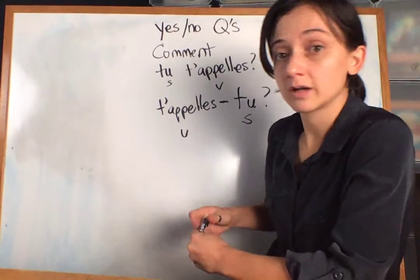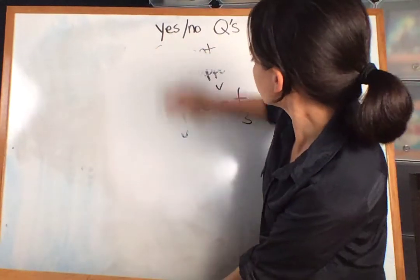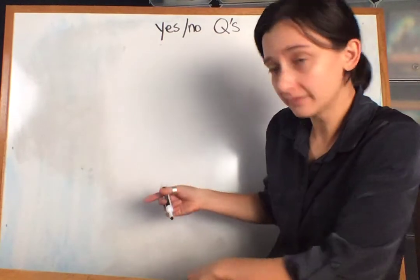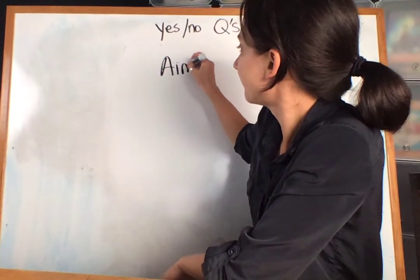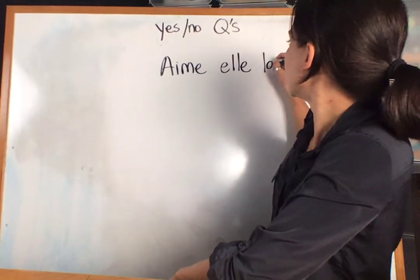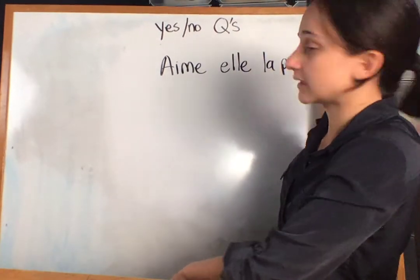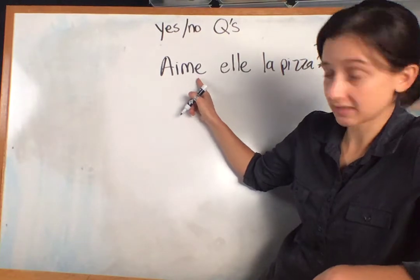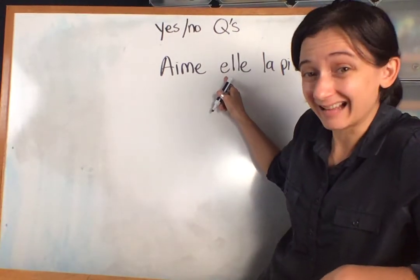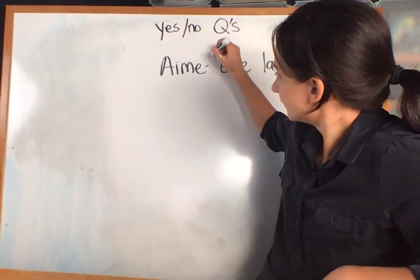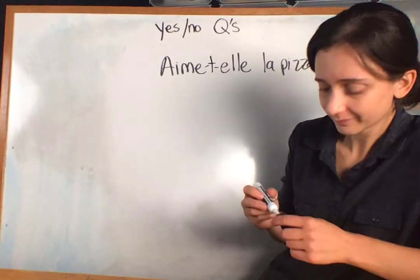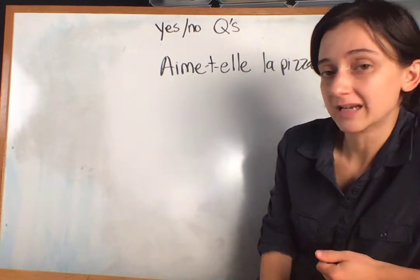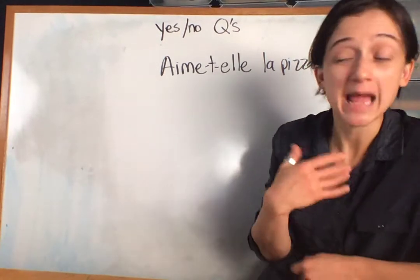Going back to our 'does she like pizza' question: instead of 'Elle aime la pizza,' we do the inversion: 'Aime-t-elle la pizza?' There's one trick — if the verb ends in a vowel and we have 'il' or 'elle,' we need to put a '-t-' in between. That's just for pronunciation; we don't want to say 'Aime-elle.' It doesn't change the meaning, we just put the 't' in there: 'Aime-t-elle la pizza?'